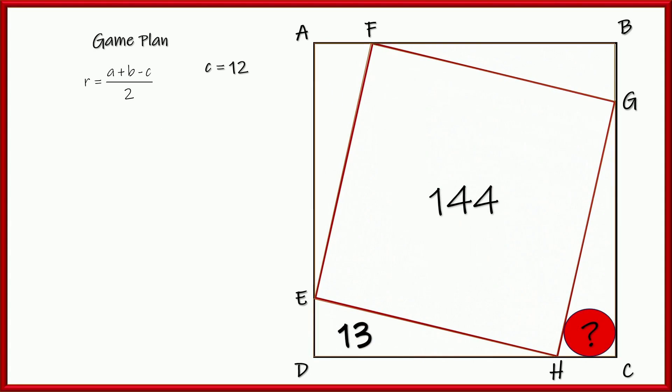So, now, let's go ahead and dive into that. So, because this triangle has an area of 13, all four triangles have an area of 13 each. Since the square is 144, that means square ABCD, the biggest square on the outside, is 144 plus 52, 4 times 13. That makes 196.